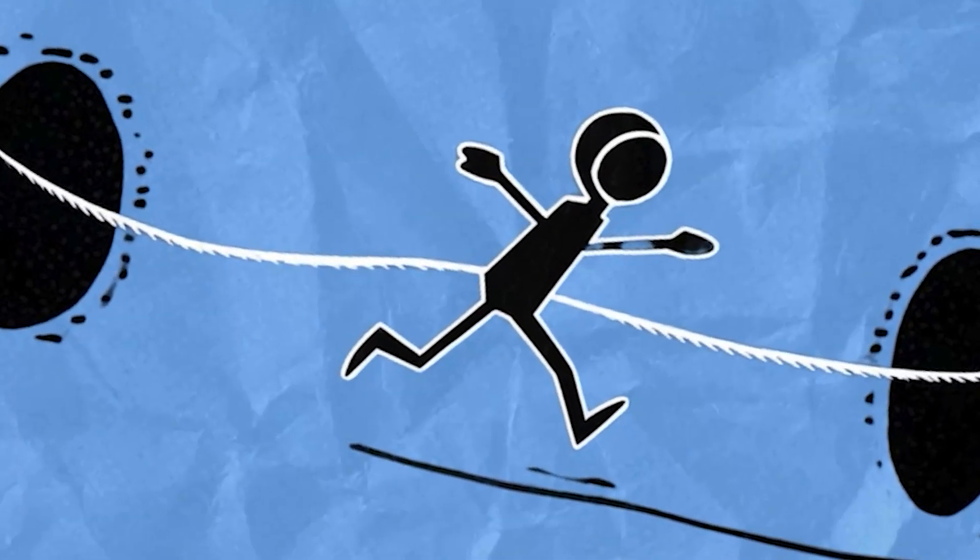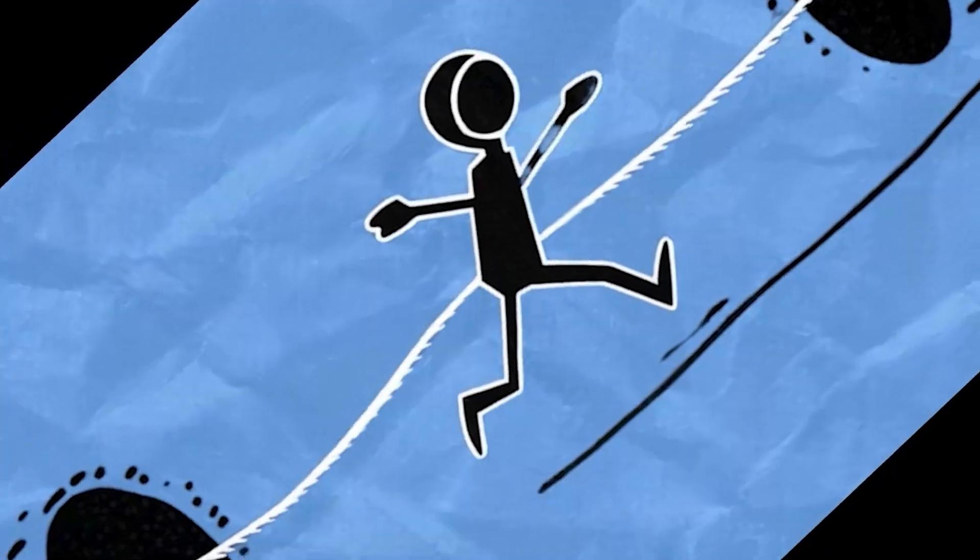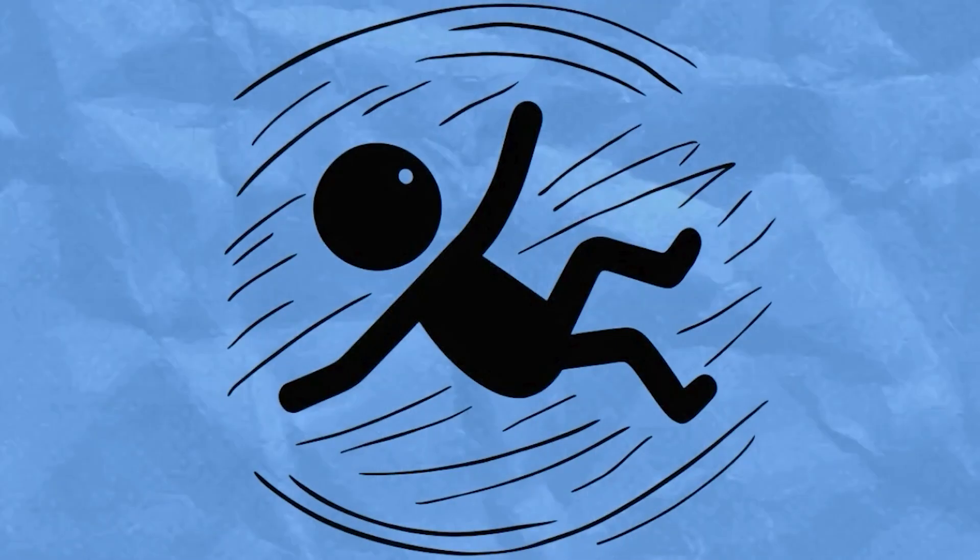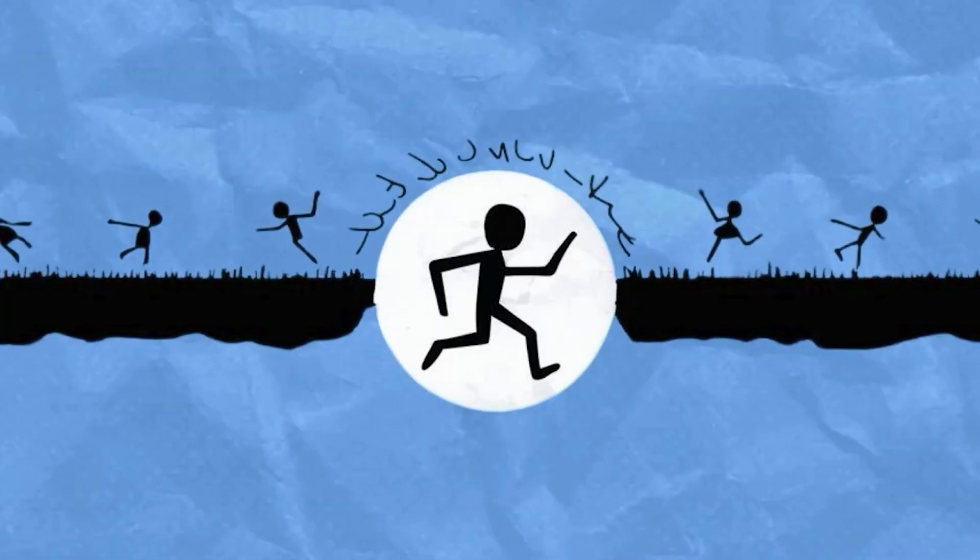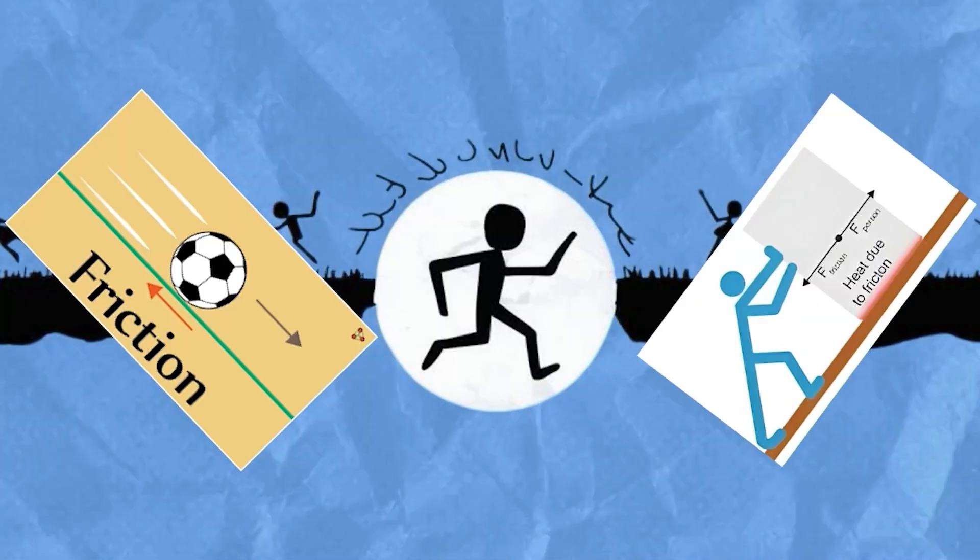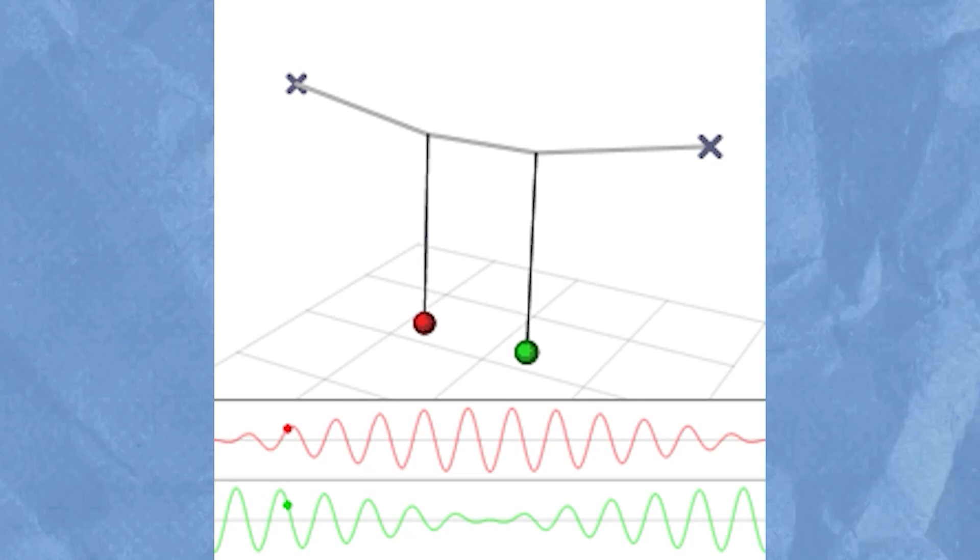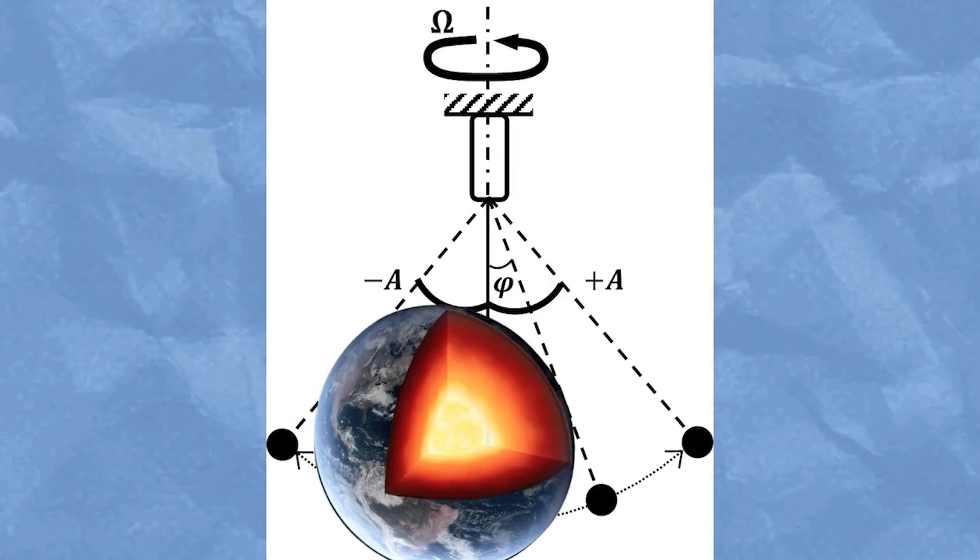If there were no air resistance, you would then fall back again, essentially oscillating back and forth like a pendulum. But air resistance would play a big role here. With the presence of air in the tunnel, you would lose energy to friction and heat, and your oscillations would gradually decrease in amplitude until you eventually came to rest at the centre of the Earth.